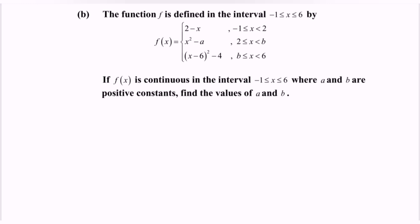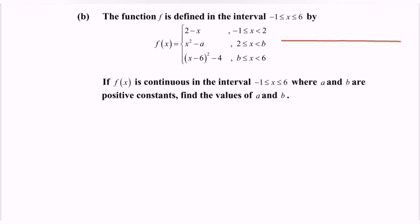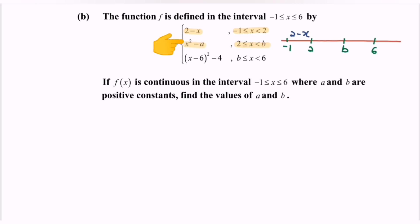Step one is to illustrate the situation on a number line. We locate the values: negative 1, then 2, then b, and finally 6. From negative 1 to 2, the function is 2 minus x. From 2 to b, the function is x squared minus a. And from b to 6, the function is (x minus 6) squared minus 4.